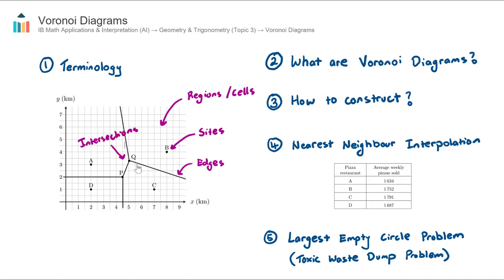Let's now talk about what Voronoi diagrams are. A Voronoi diagram is kind of like a map — picture it like a map of an area where you're looking to go in a certain direction. The map is separated by these edges. What's important — and it's the whole purpose of a Voronoi diagram — is that any particular location within a region, let's focus on the region containing Site C, is closest to Site C.